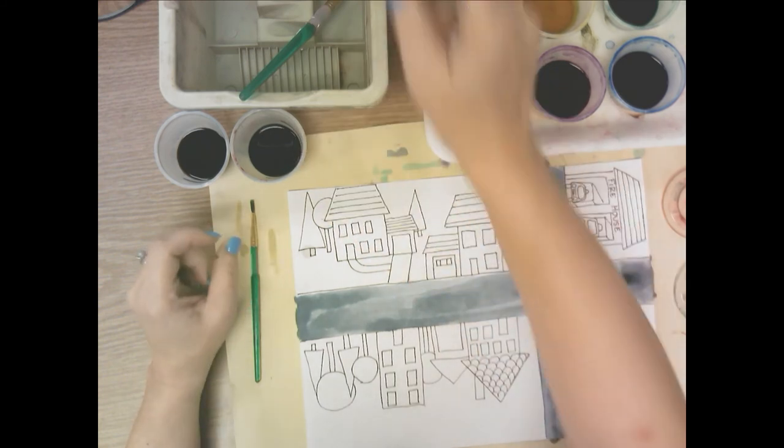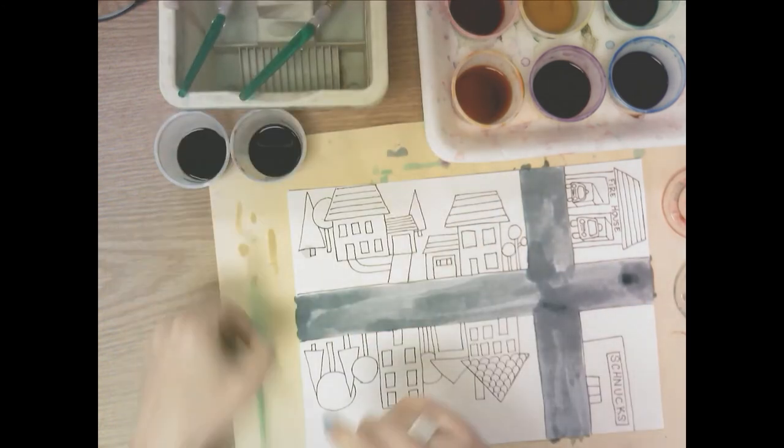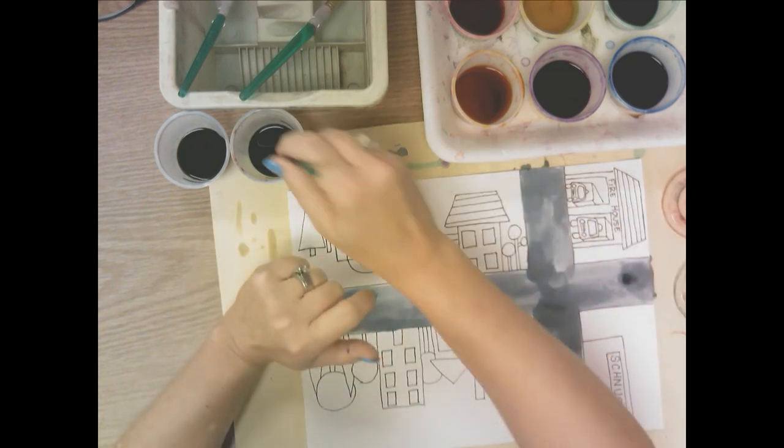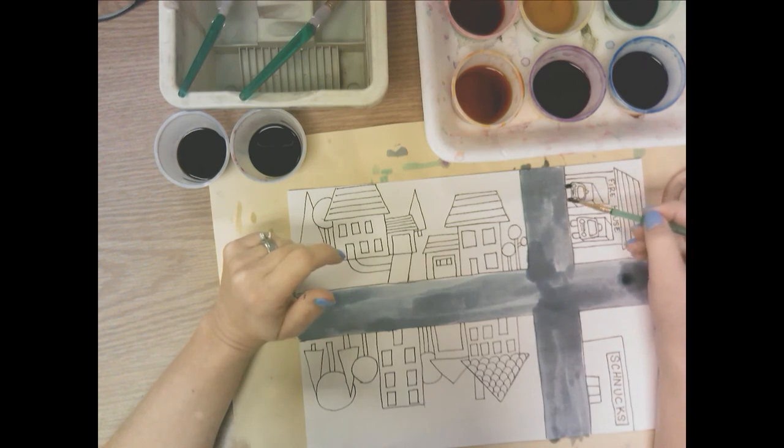Now I'm going to look and see if there's any other black I want to add. And I do want to add some black to the tires on my firetruck. So I'm going to use the tiny paint brush, dip it in the black, and very carefully try and paint the tires of my firetrucks.